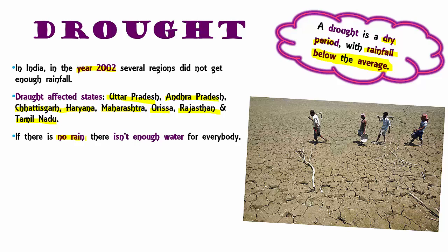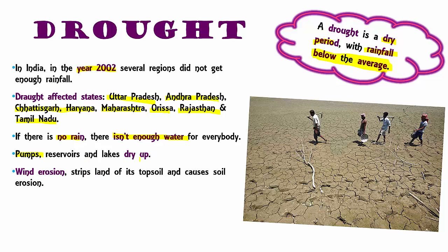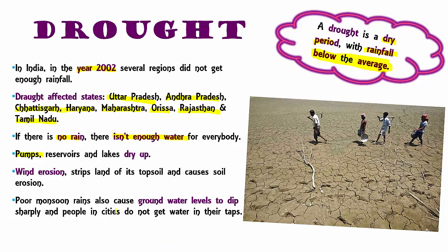If there is no rain, there is not enough water for everybody to drink. Even pumps, reservoirs, and lakes dry up. You can see how the surface of the soil becomes cracked. Wind can easily take away the topsoil, causing soil erosion which leaves the land barren. No more fertility will be left in the soil for things to grow. Poor monsoon rains also cause groundwater levels to dip, so cities do not get enough water in their taps. Everything is interrelated — one is a chain reaction to another.